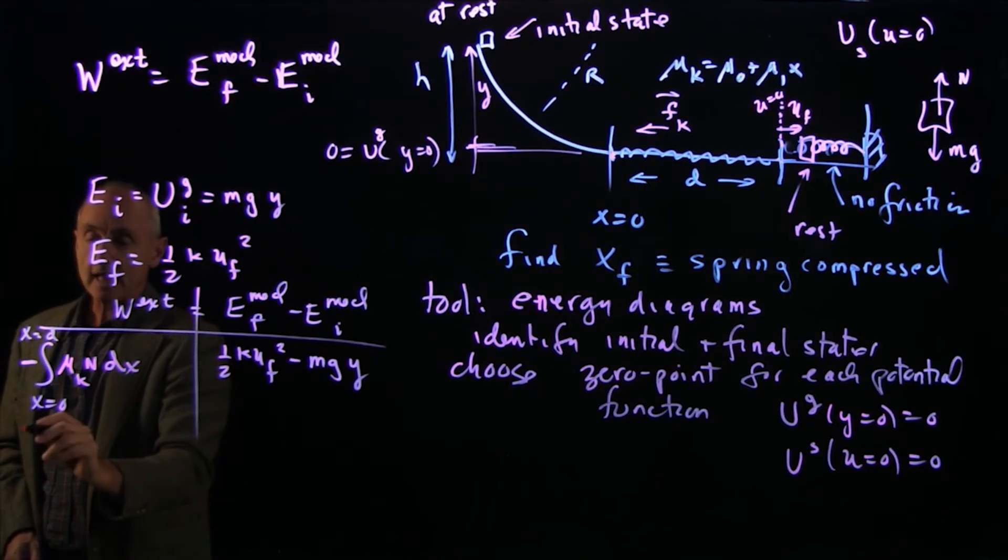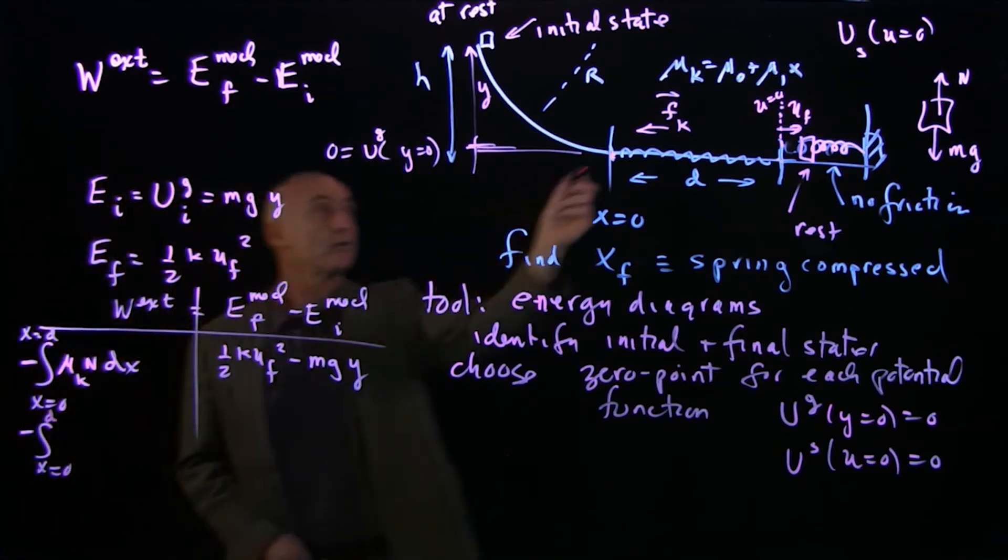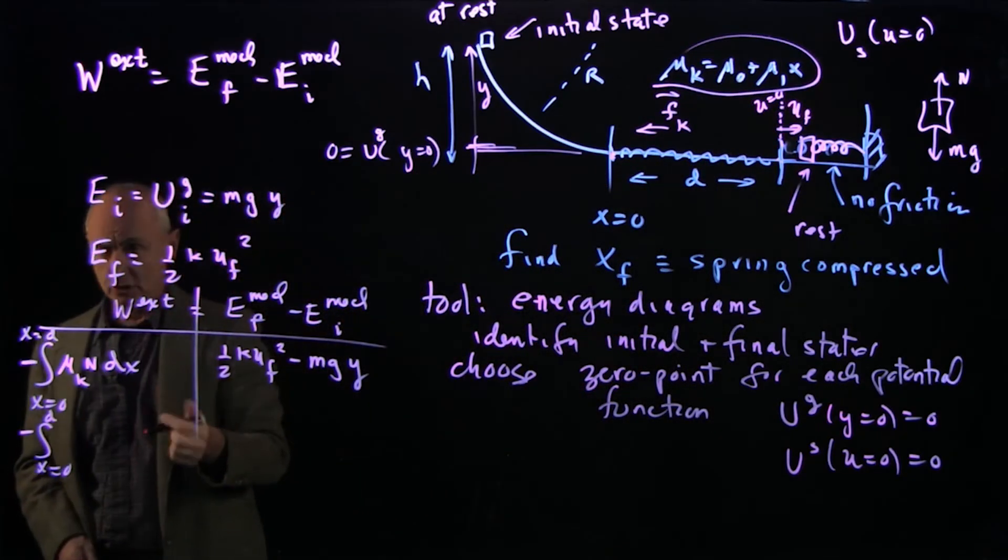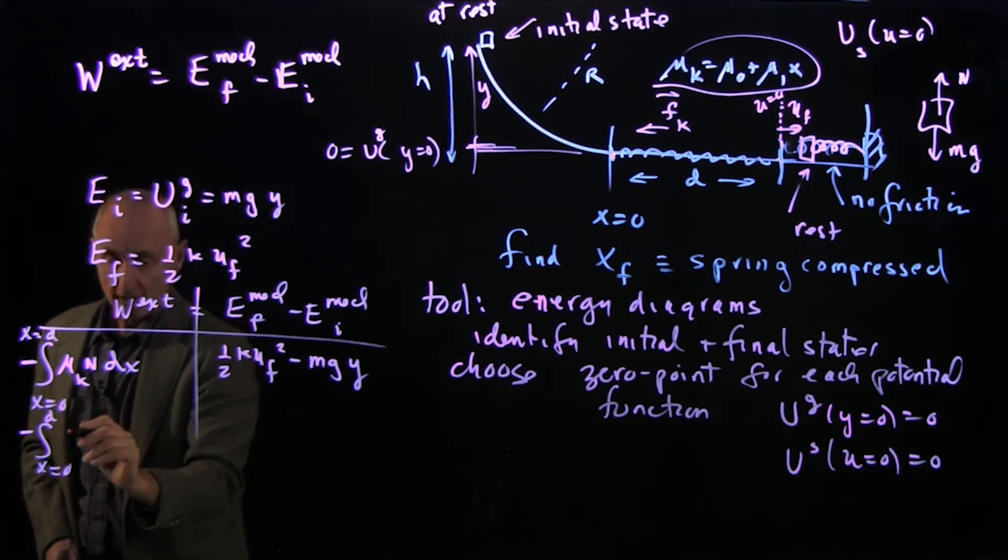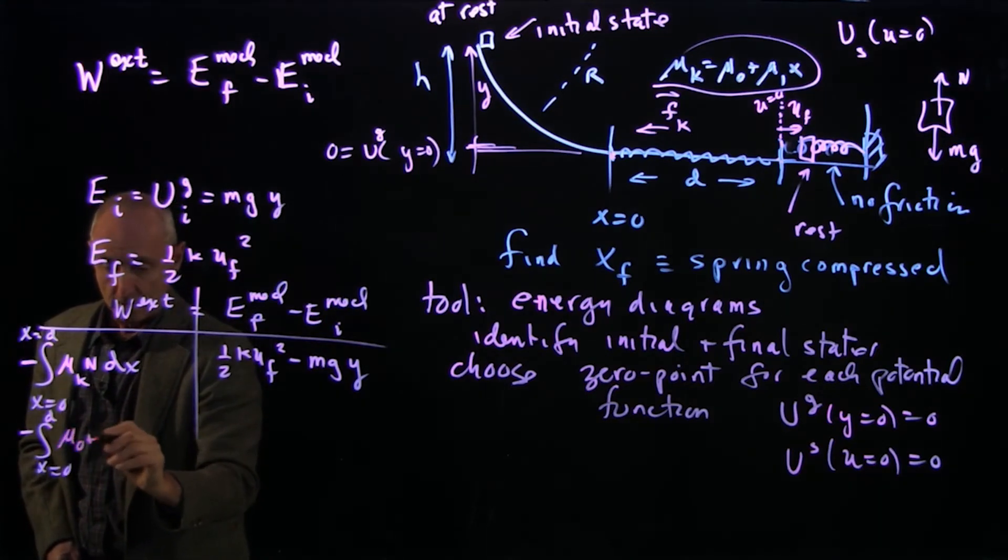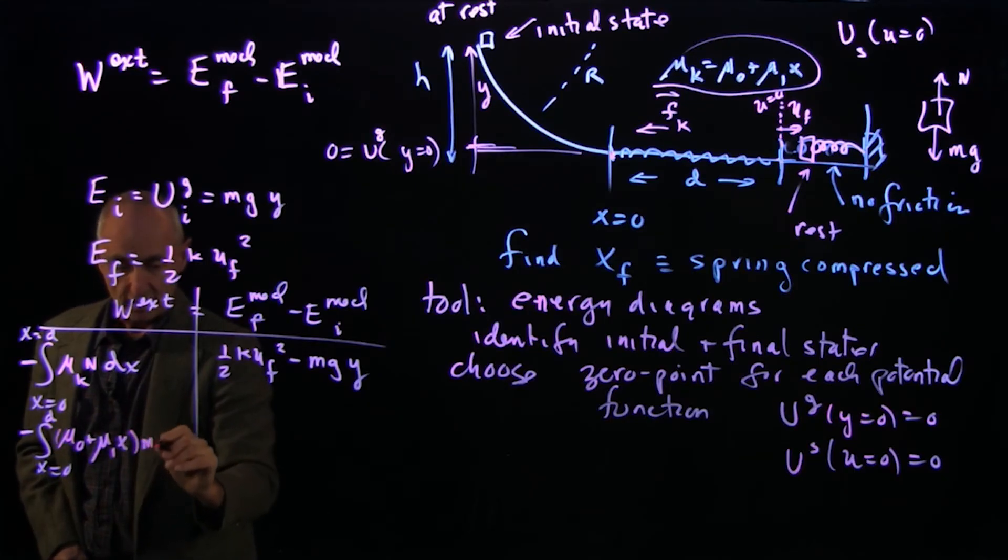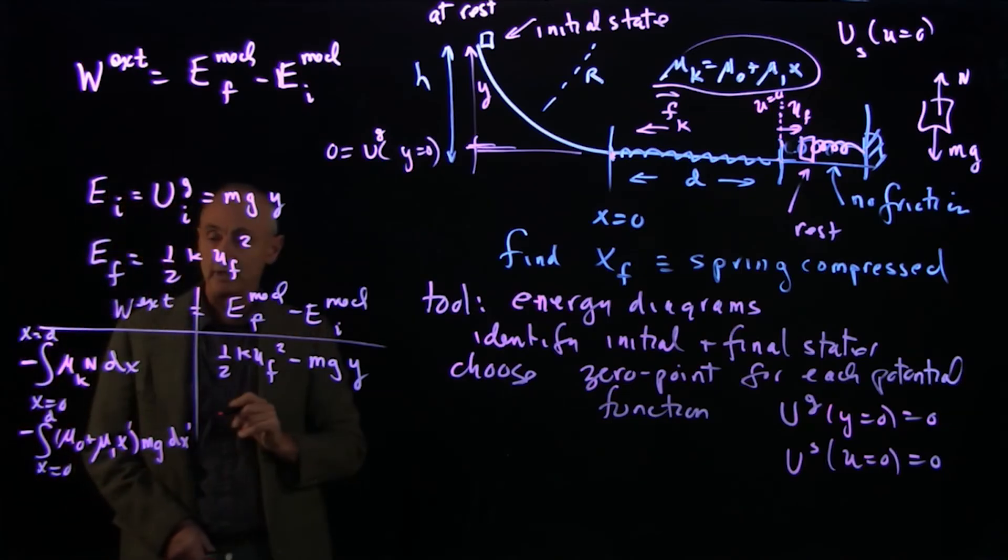Now, that 0 to d, notice that our coefficient of friction is varying. And I chose that intentionally to show you that friction is really an integral. So we have mu 0 plus mu 1 x mg dx. Let's put our integration variable in there.